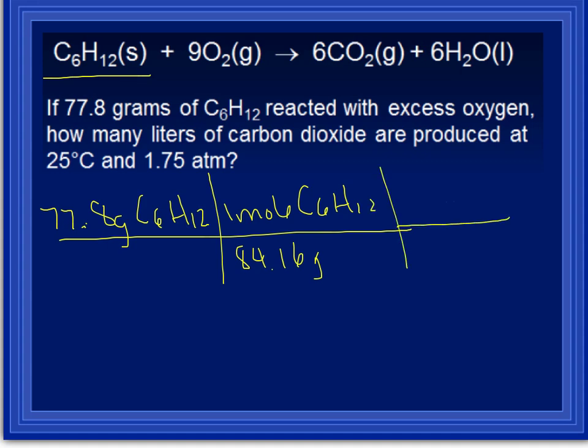Then we're going to convert using our stoichiometry from moles of C6H12 to moles of carbon dioxide. So for every one mole of C6H12, there are 6 moles of CO2 produced. Okay, so for the math, 77.8 divided by 84.16 times 6, or multiply all the way across from the top, multiply across from the bottom, and then divide, we get 5.55 moles of CO2.